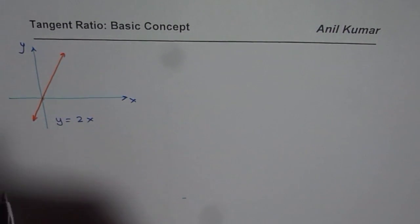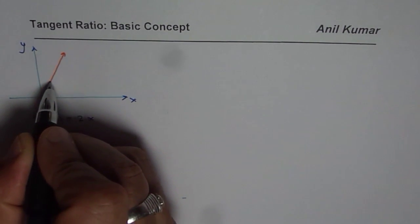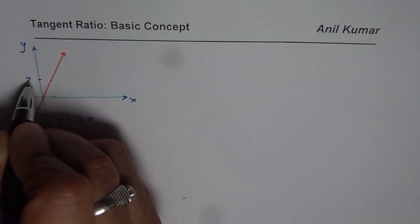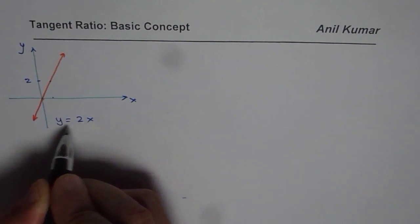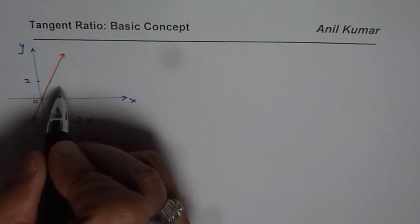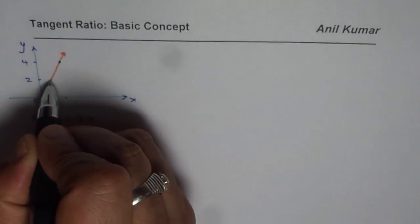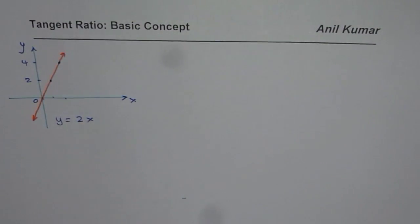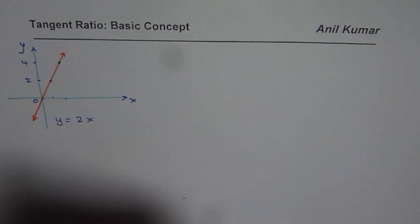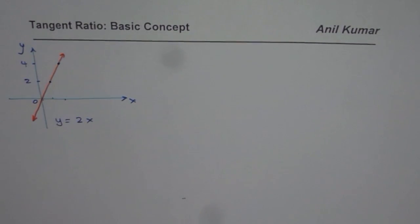When we say 2x that means if x is 1, then y is 2. So this value is 2. And if x is 0, y is 0, so it goes through origin also. If x is 2, then the y value will be 4. So likewise we can get a lot of points and all these points will lie on a straight line and therefore y equals to 2x will represent a straight line.